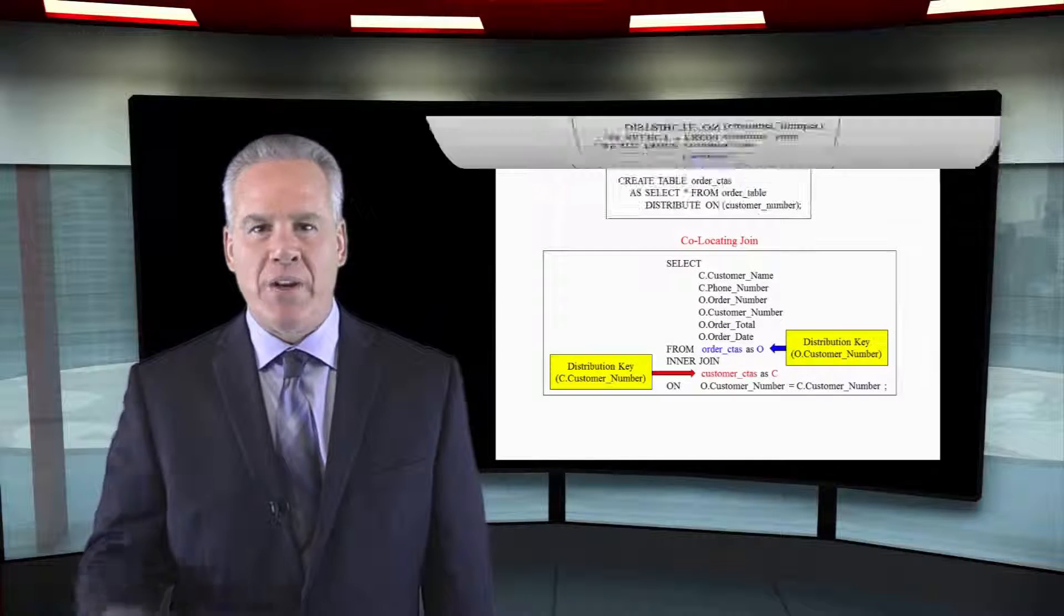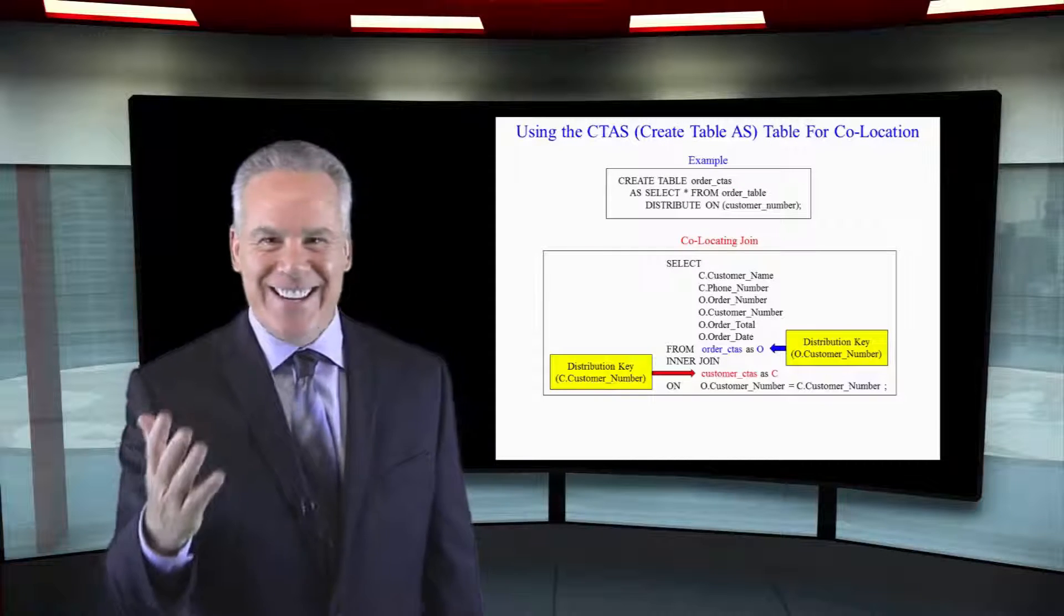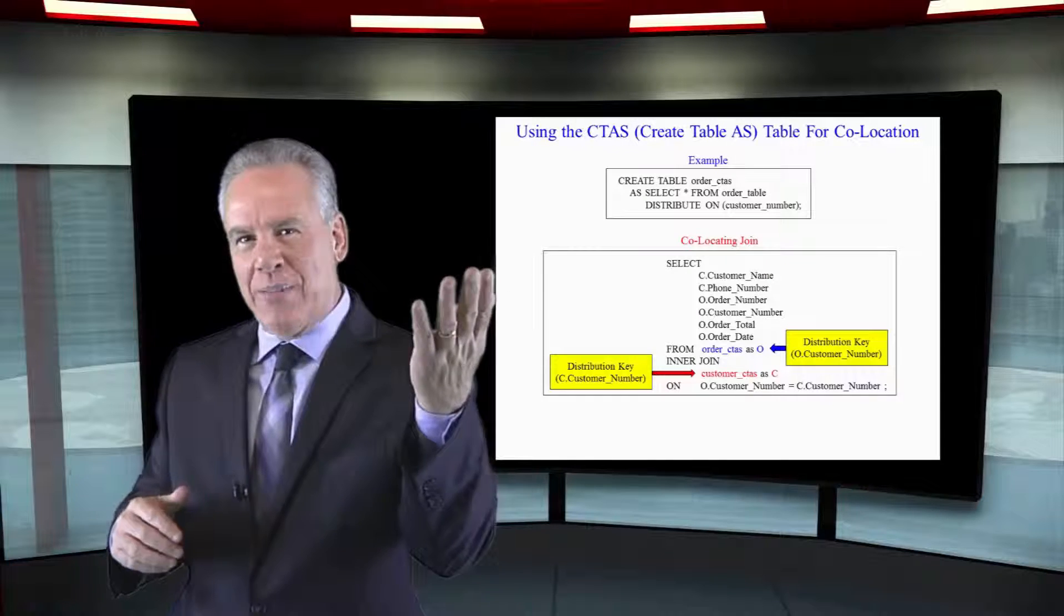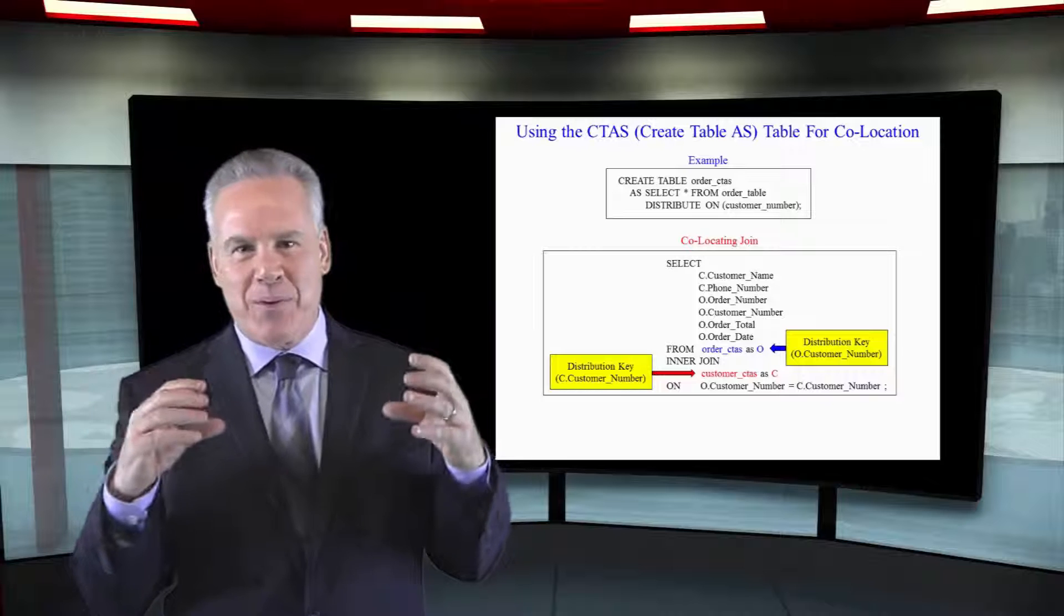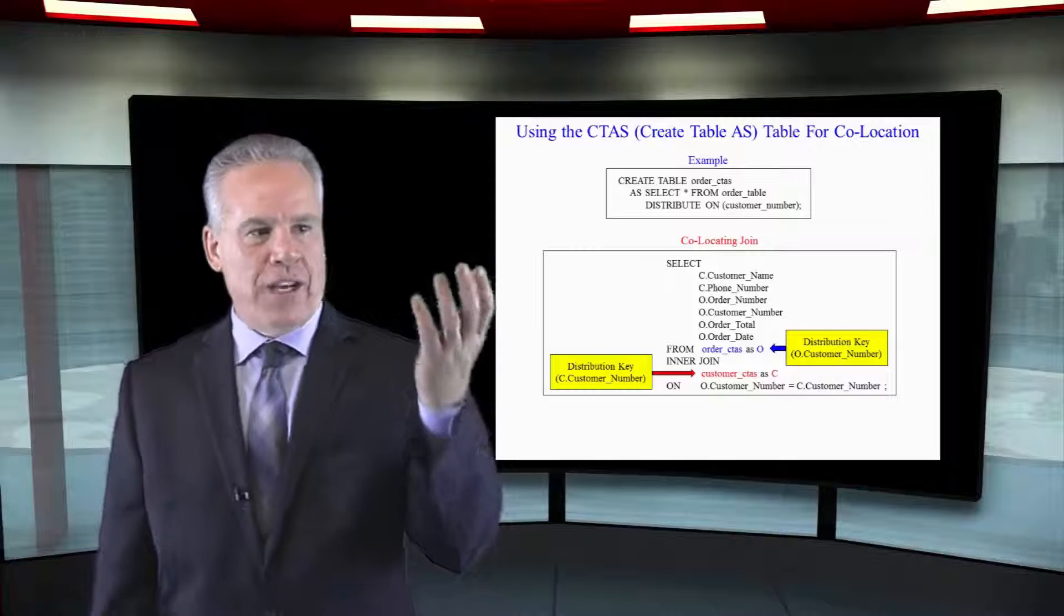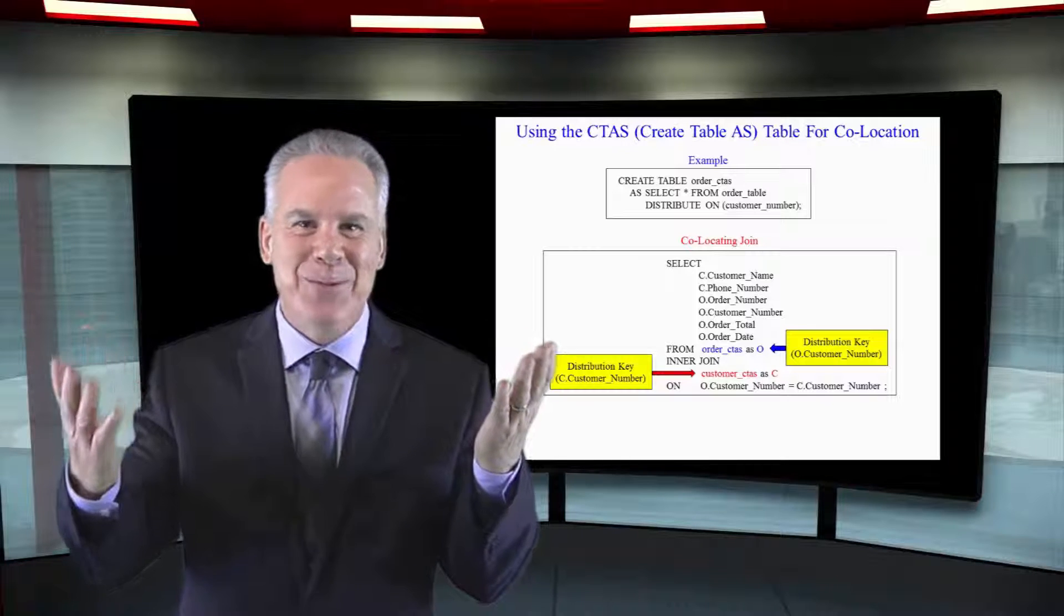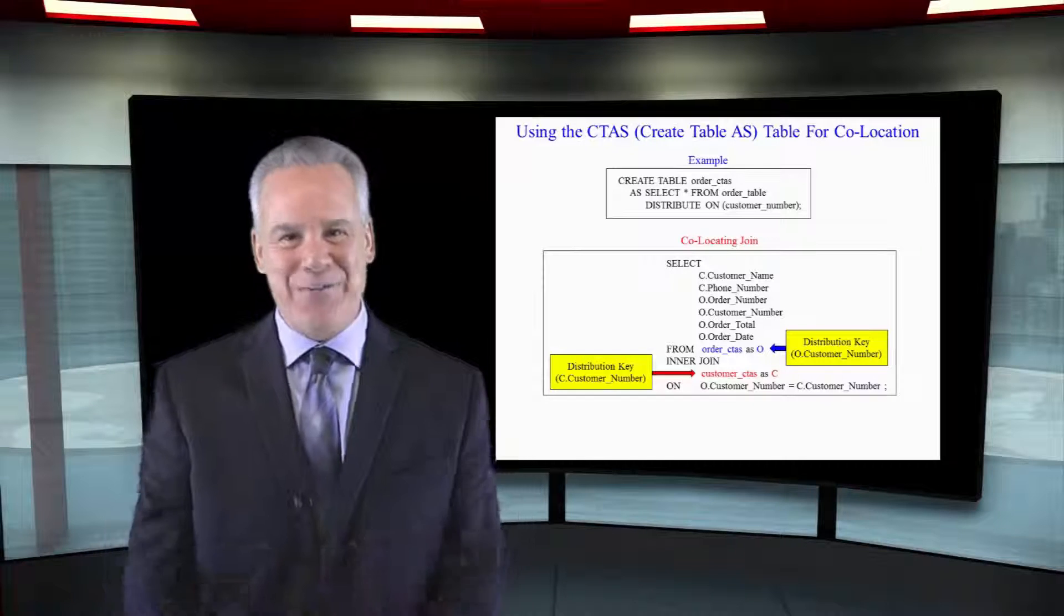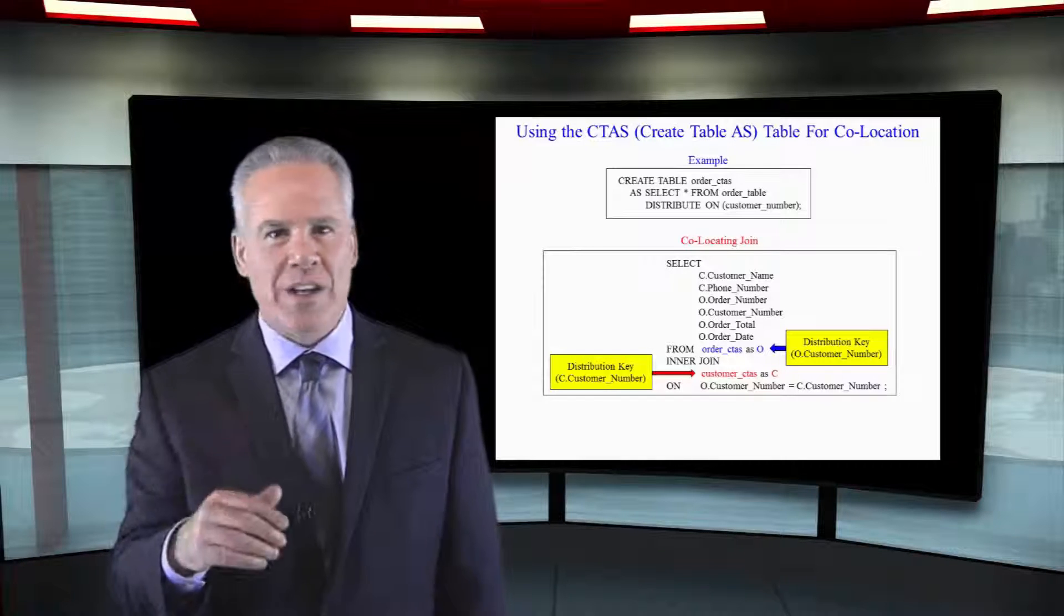One of the reasons you might create a CTOS table is for co-location on your joins. In the past, we've seen the customer table joining to the order table on customer number equals customer number, yet the distribution key of the customer table was customer number, but the order table was order number. So there's redistribution to get the matching rows on the same spool. So look what we have done here.